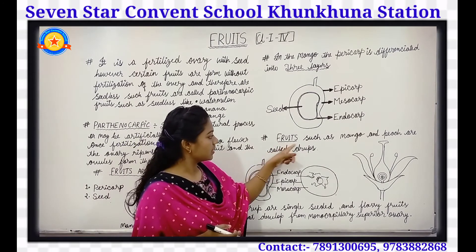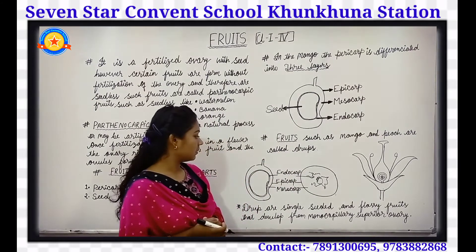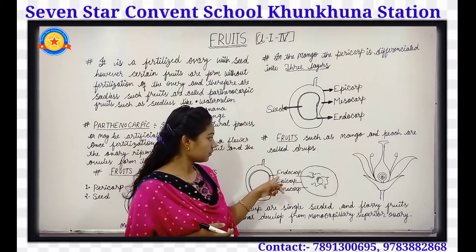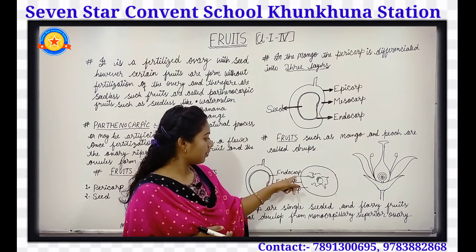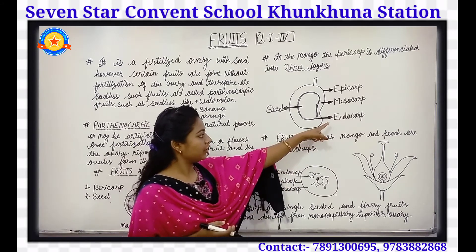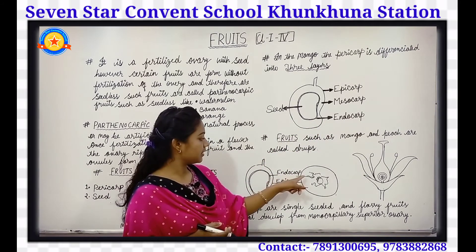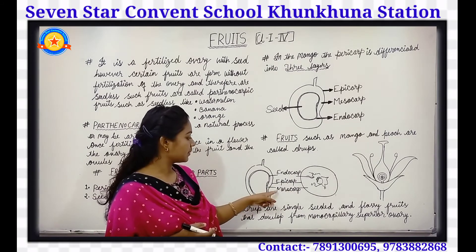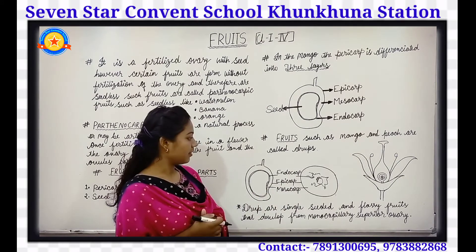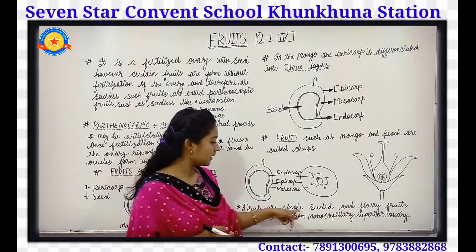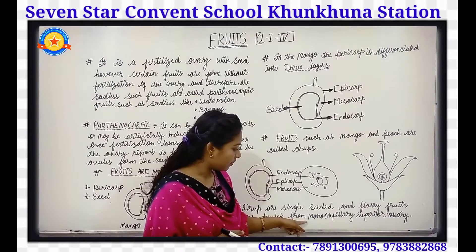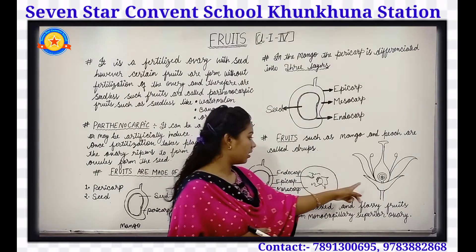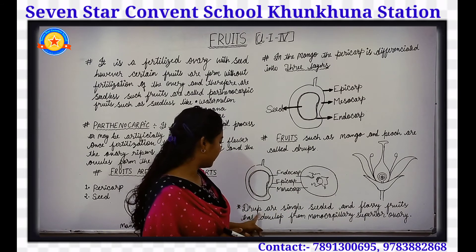Fruits such as mango and peach are called drupes. You can see the mango fruit and the peach here. The endocarp is the innermost layer, the epicarp is the outer layer, and the mesocarp is the middle layer of the fruit. These drupes are single-seeded and fleshy fruits that develop from a monocarpellary superior ovary.